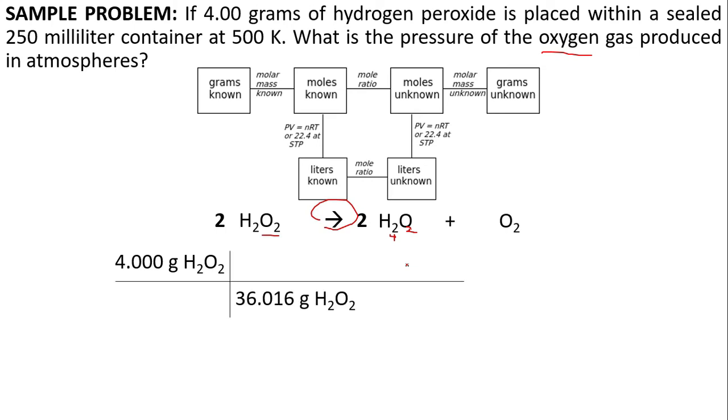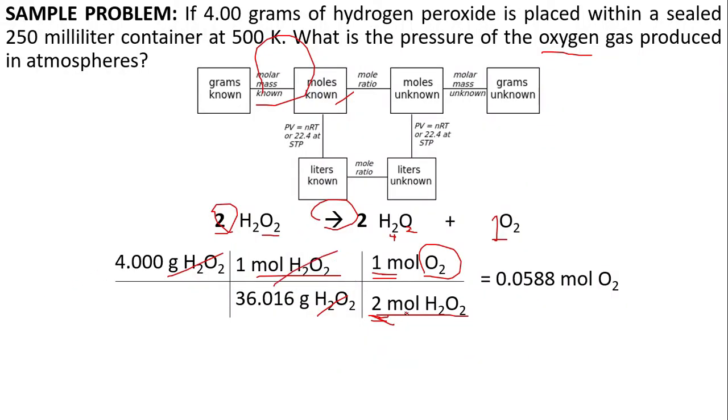Let's start from the given. Use the molar mass to get the moles. Cancel the grams. Let's use the mole ratio. Since the given here is mole H2O2, we put H2O2 in the bottom. Since we want to get mole O2, it's in the numerator. Then just copy the coefficients. The answer will be 0.0588 moles of oxygen.